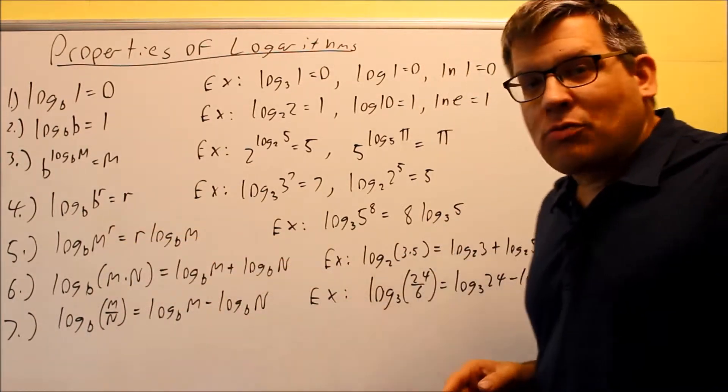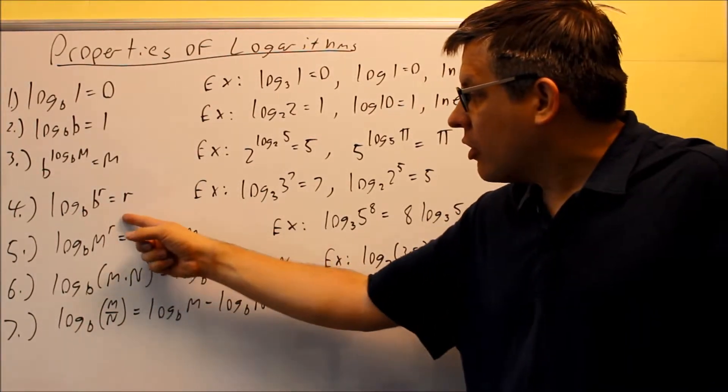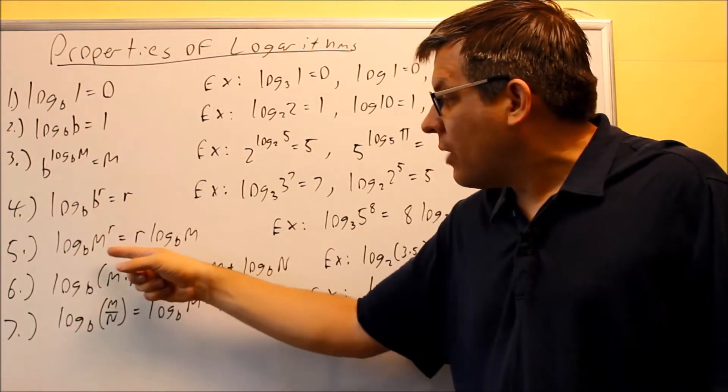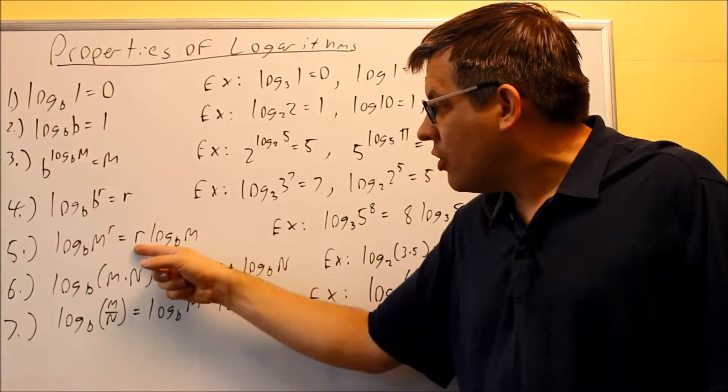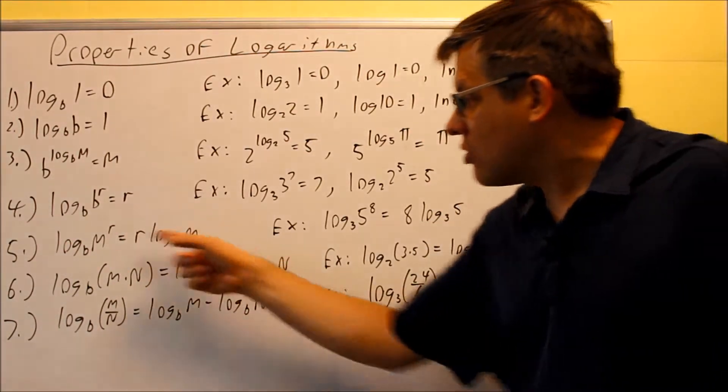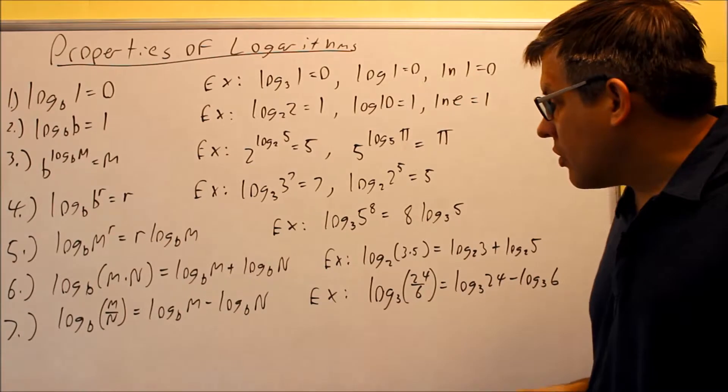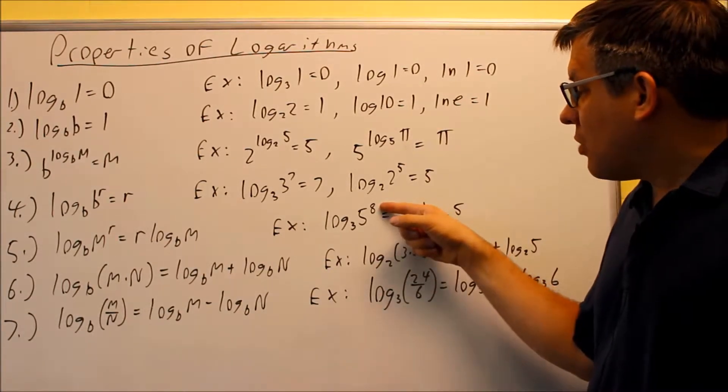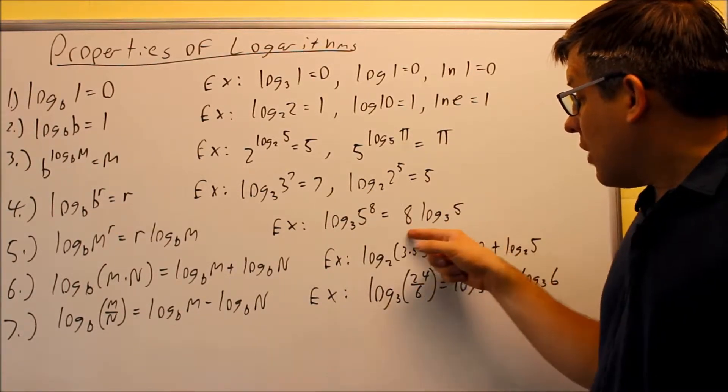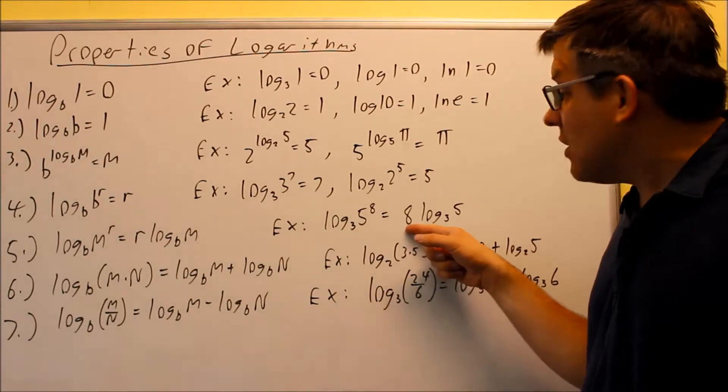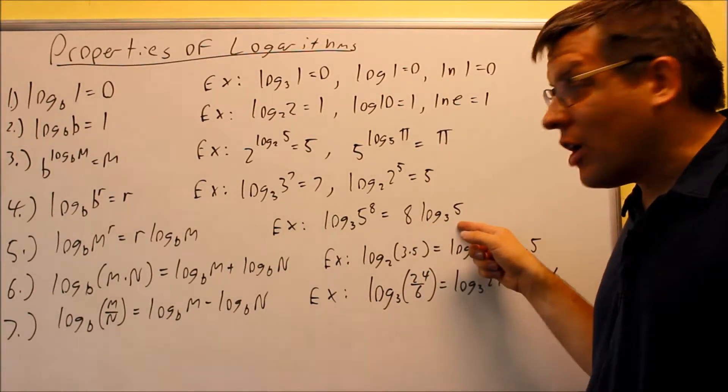This property I just mentioned - you're allowed to take the power and bring it down front, or go the other way. If it's down front, you can bring it back up to the top. So you can go either direction. If you've got the 8 up here, you can move it down in front and it becomes multiplication: 8 times log base 3 of 5.